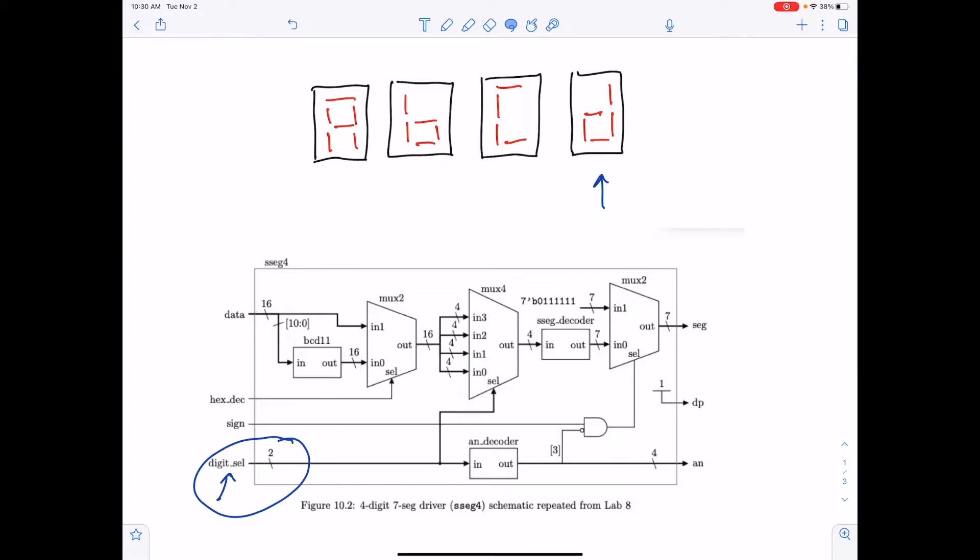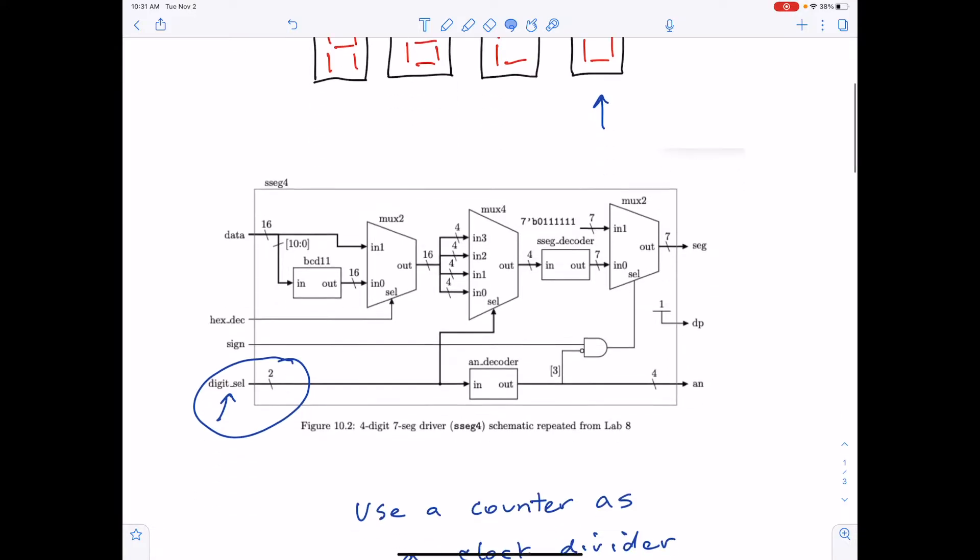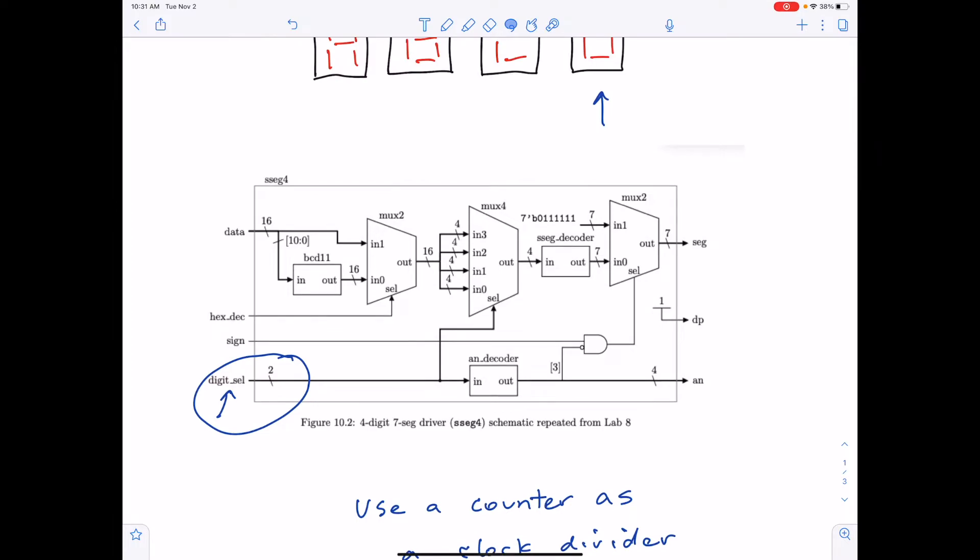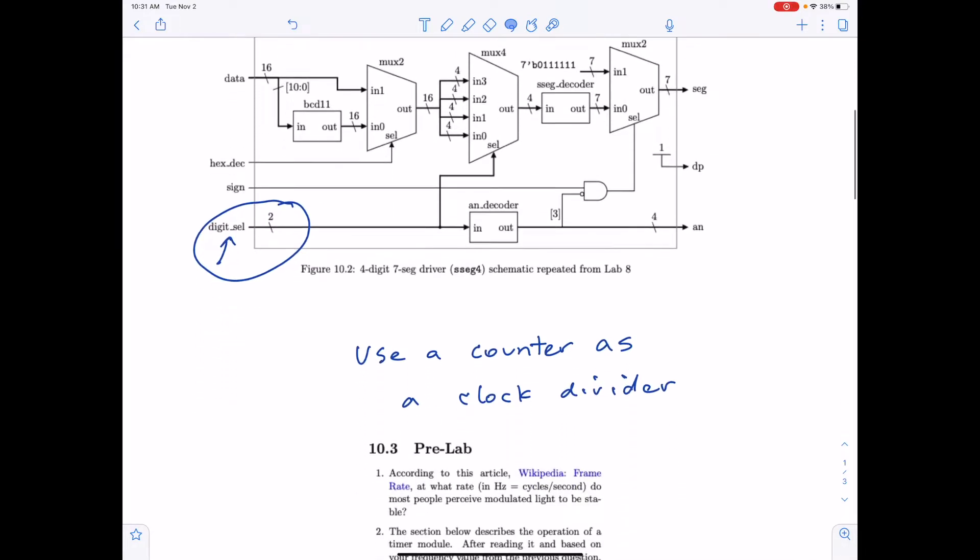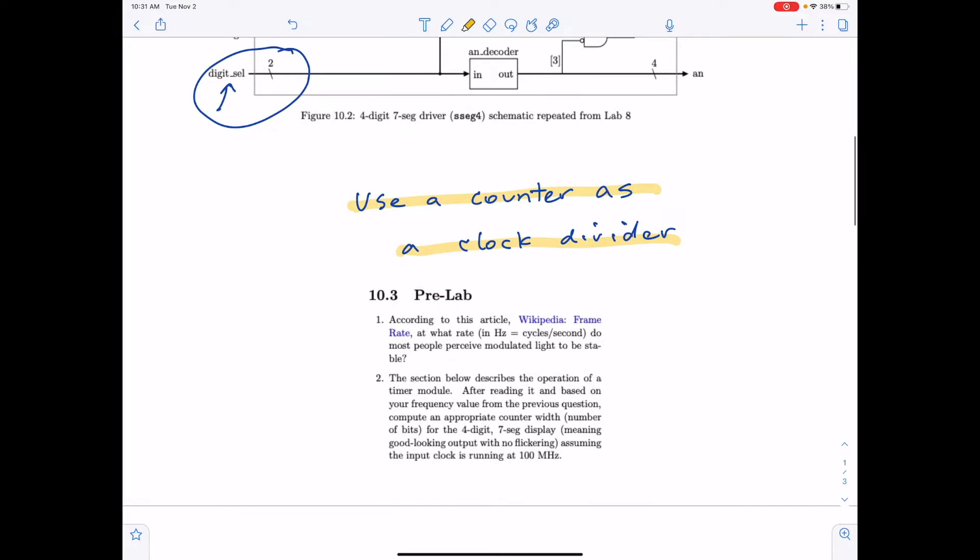In the pre-lab, there's a web link that shows what the rate needs to be for human vision in order to make the displays look continuous. So I'd like you to take a look at that and figure out what that clock rate should be. We're going to have to take the 100 megahertz clock that's coming from the board and divide that down with a counter.